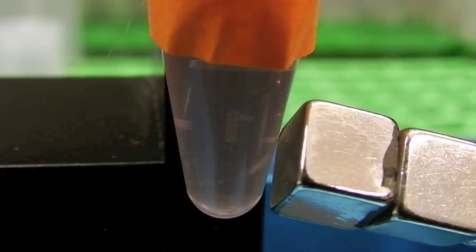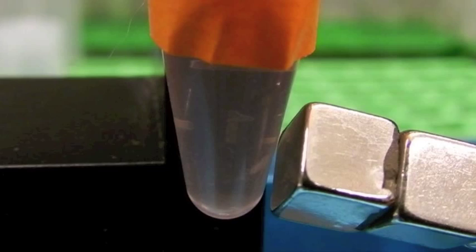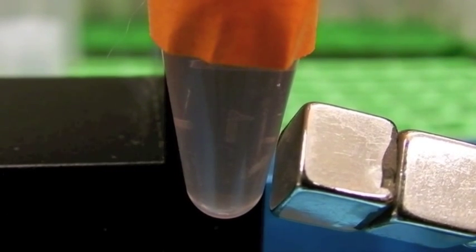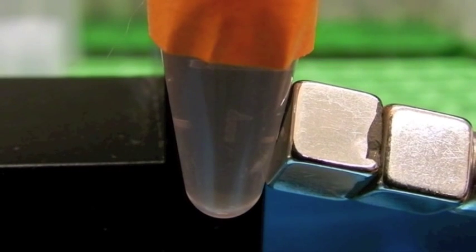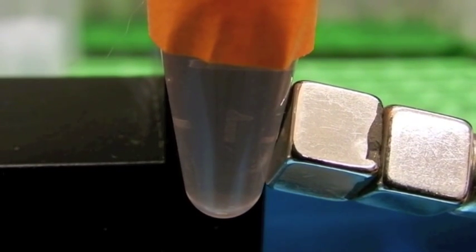Magnetotactic bacteria in the northern hemisphere usually swim northward, while those found in the southern hemisphere swim southward. In both cases this would direct the bacteria downward and is thought to allow it to find bottom sediments in an aqueous environment.